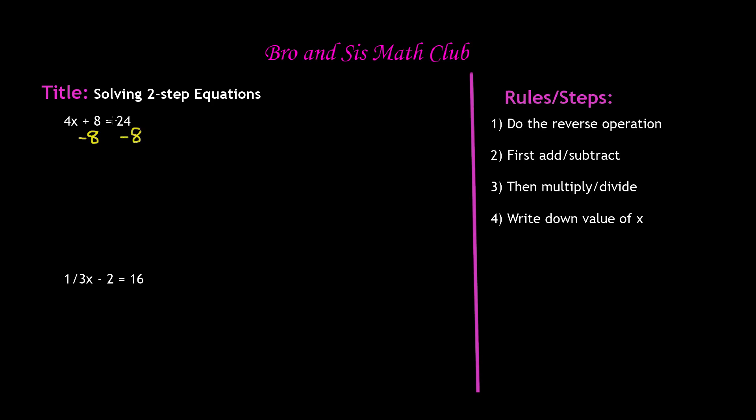So whatever you do to this side, you have to do to the other side because equations need to be balanced. So the positive and negative cancel each other out, which leaves us with 4x is equal to 24 minus 8, which equals 16. So now we're done with doing the addition or subtraction. Next, it says to multiply or divide.